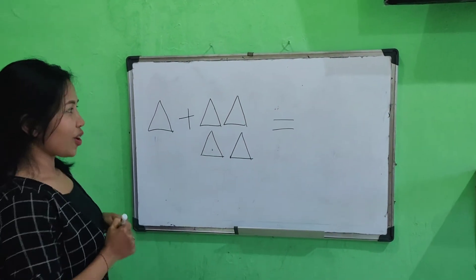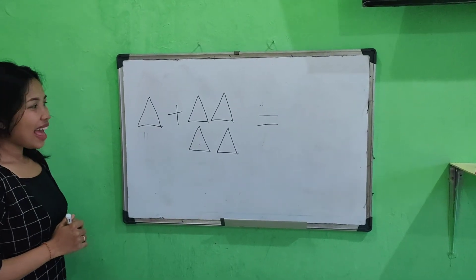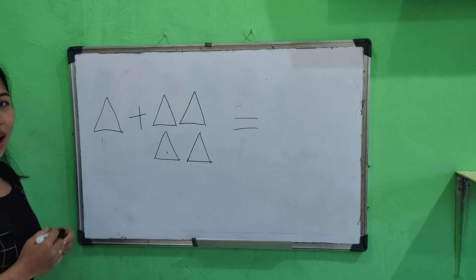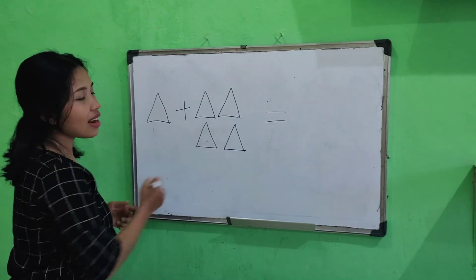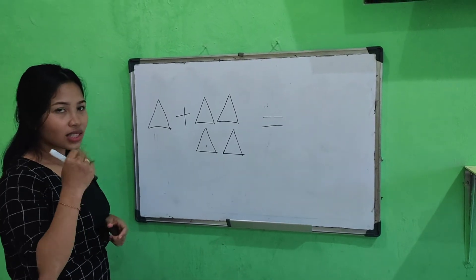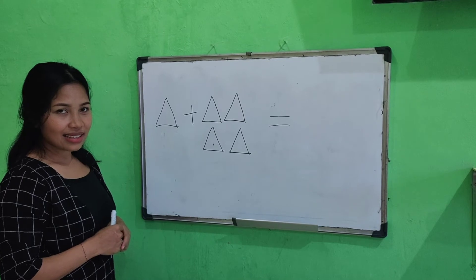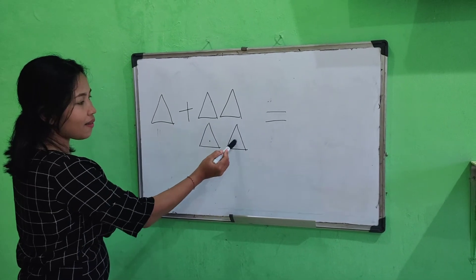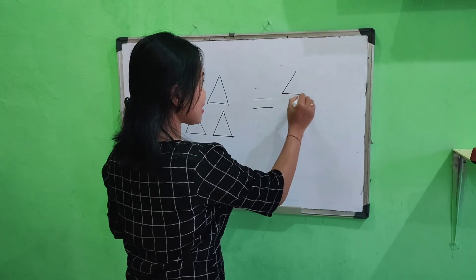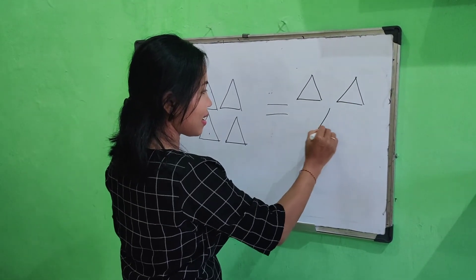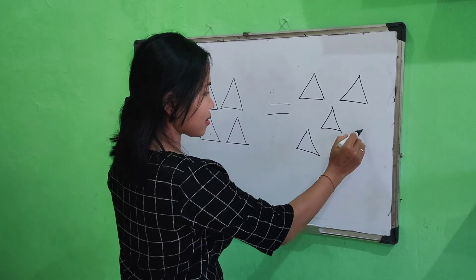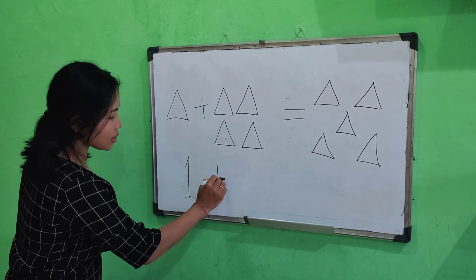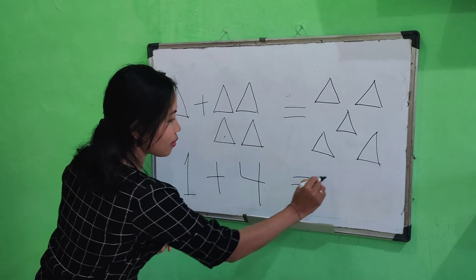Okay, next. What is this? Yes, this is triangle. Okay, let's count all this triangle. Here, Nisema has one triangle. Here, Nisema has one triangle. And here, Nisema has four triangle more. How many triangle? Let's count together. One, two, three, four, five. Five triangle. So, one plus four equal five.